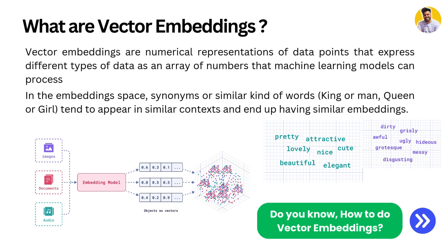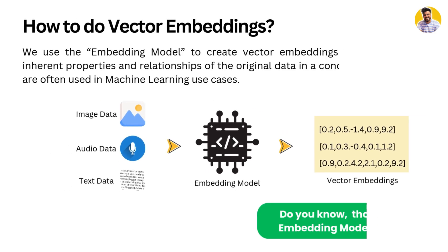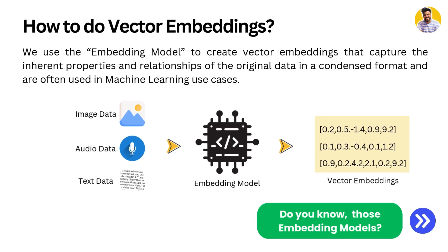How do we create those vector embeddings? We use embedding models that capture the inherited properties and relationships of the original data in a condensed format that machine learning systems can easily understand. Let me show you how to do vector embeddings using multiple types of data.